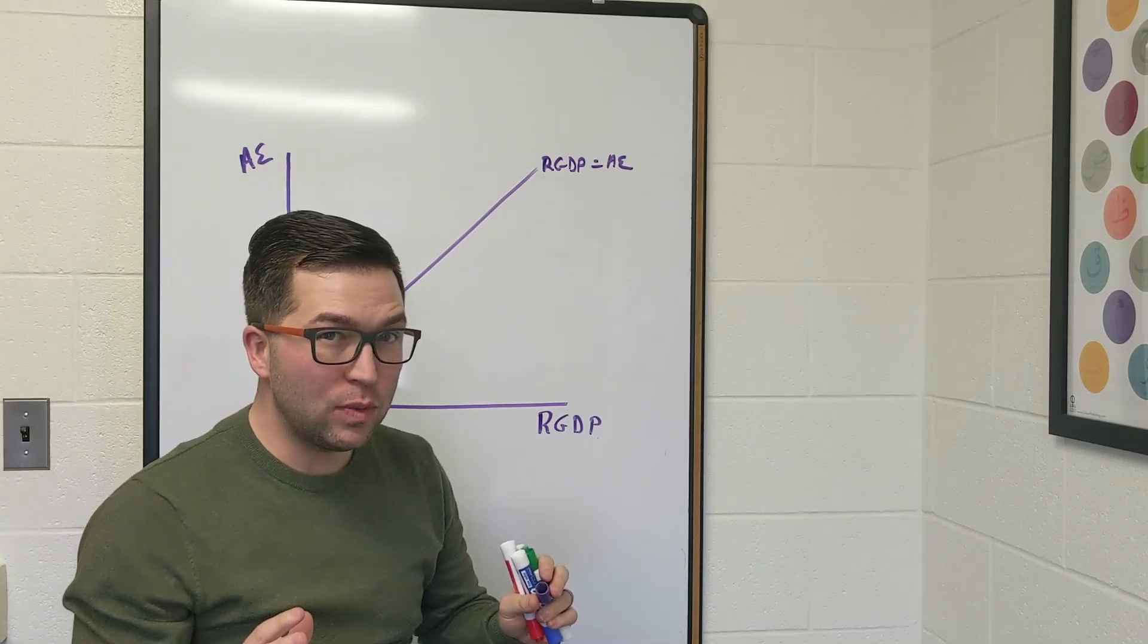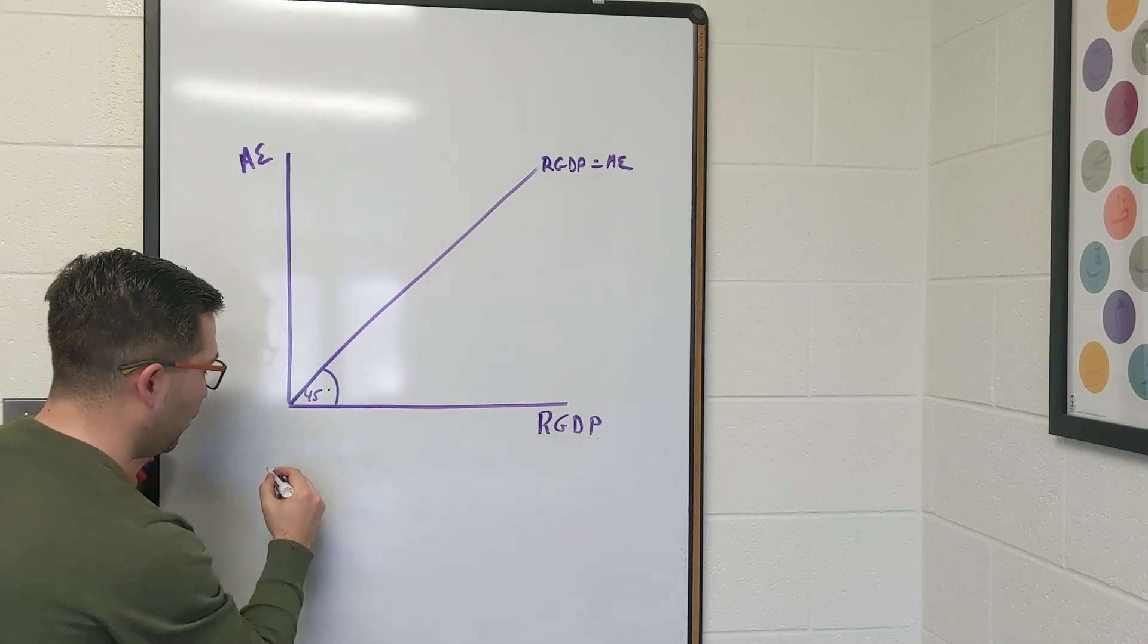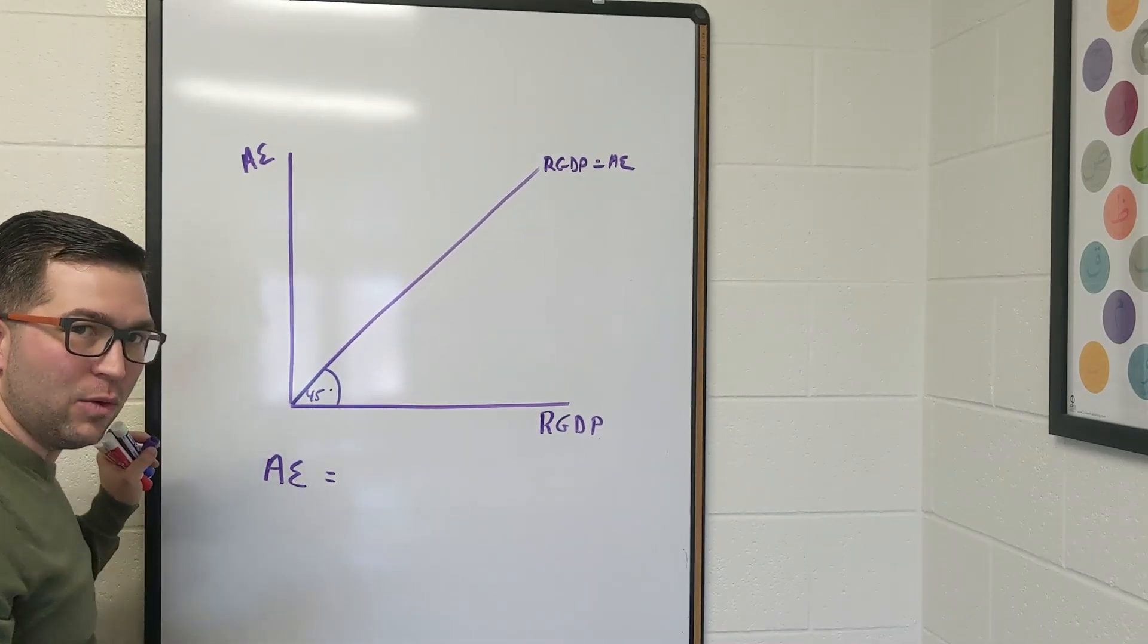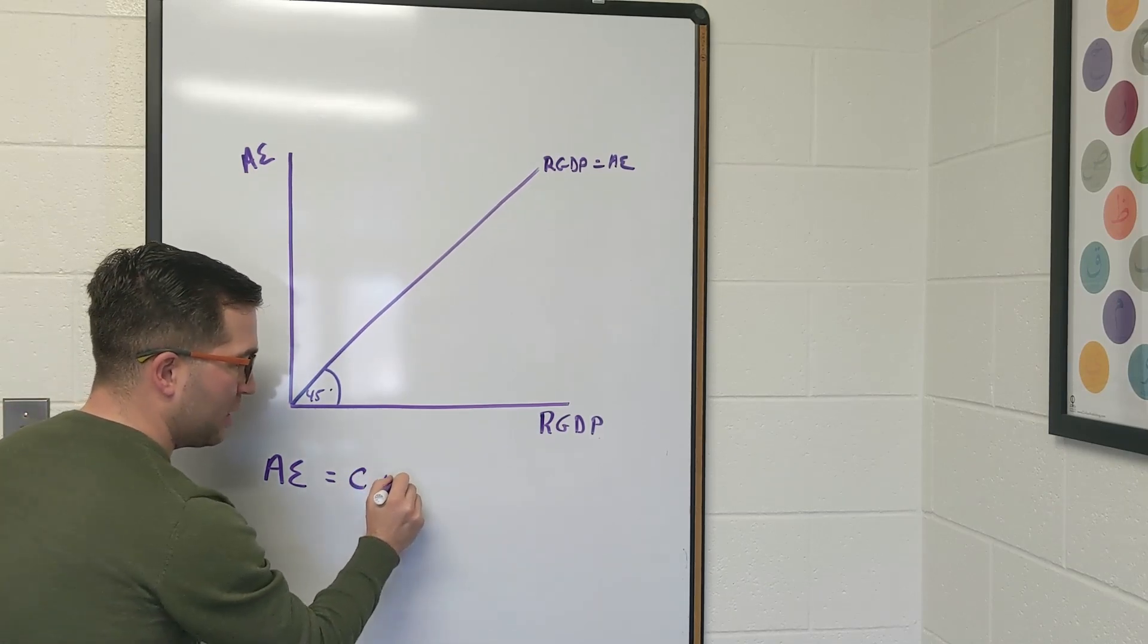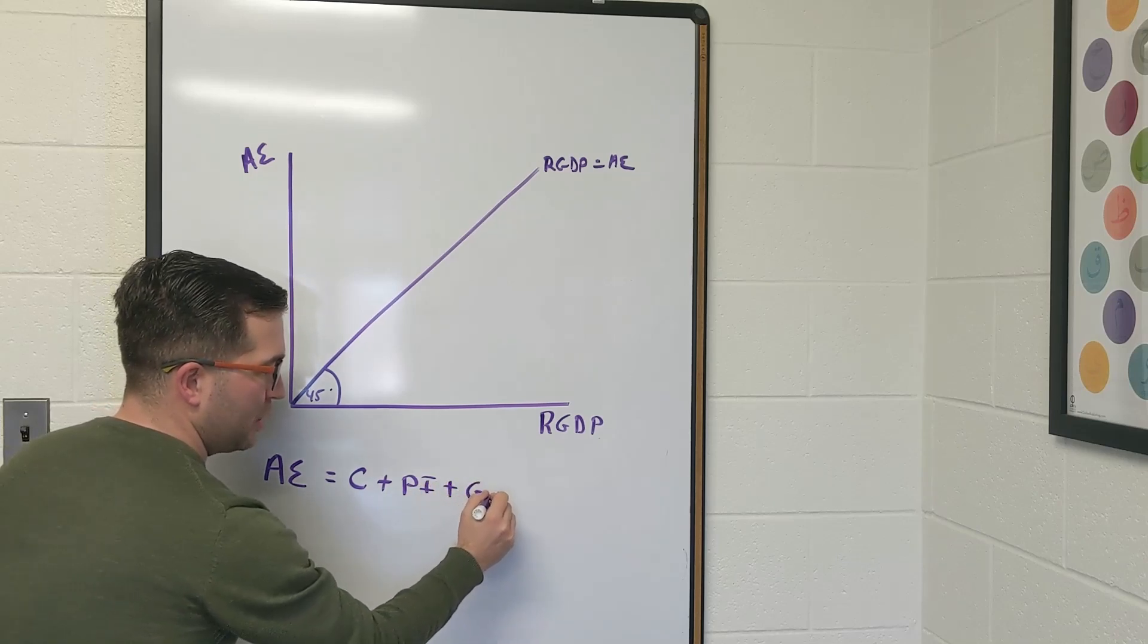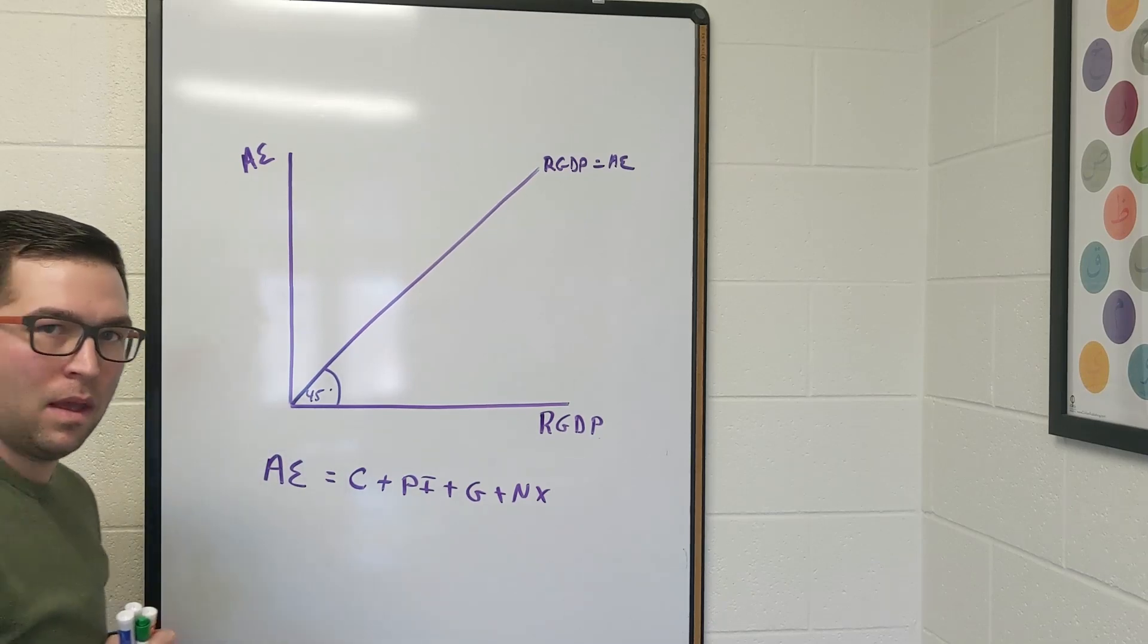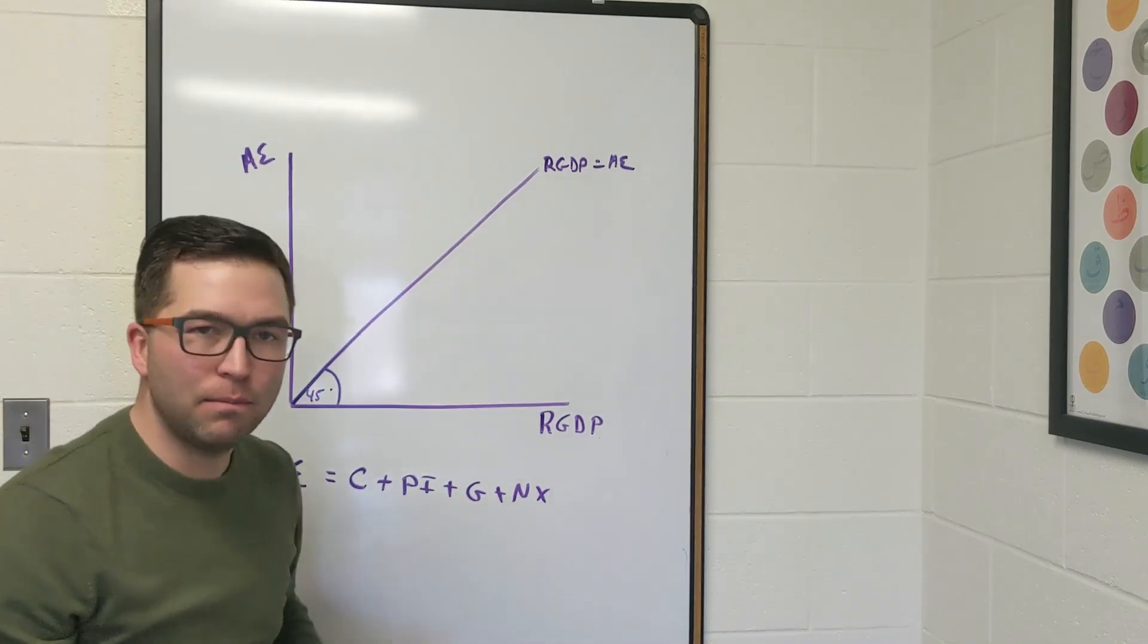So what we have to do is think, well, what exactly is aggregate expenditure? From earlier in the lesson, you should know that aggregate expenditure is equal to consumption plus planned investment plus government purchases plus net exports. And what we're going to introduce is all of these different components.